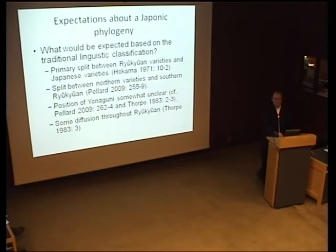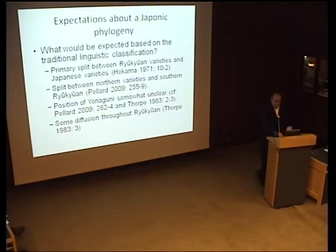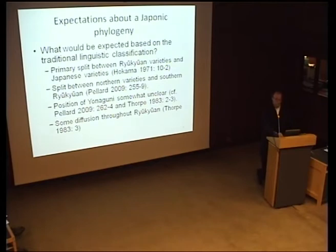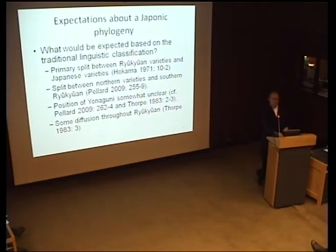What would we expect from a Japonic phylogeny well-recovered using computational phylogenetic methods? We'd first expect a primary split between Japanese varieties and Ryukyuan varieties — I cite Hokama 1971 here, though the actual citation should probably be something from the 1890s by Iha Fuyu. We'd also expect a primary split between northern and southern varieties of Ryukyuan, and the position of Yonaguni in southern Ryukyuan should be fairly unclear — there's much argument about whether it's a primary branch of Ryukyuan, part of southern Ryukyuan, or part of a Yaeyama subgroup. There should also be some diffusion, though not much, throughout Ryukyuan.